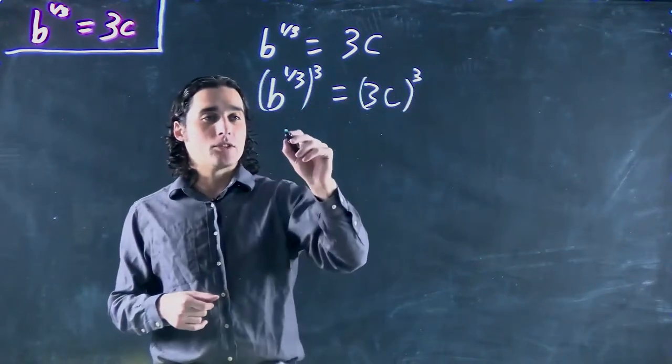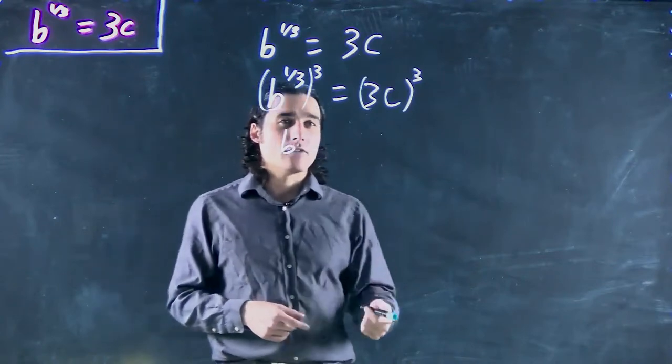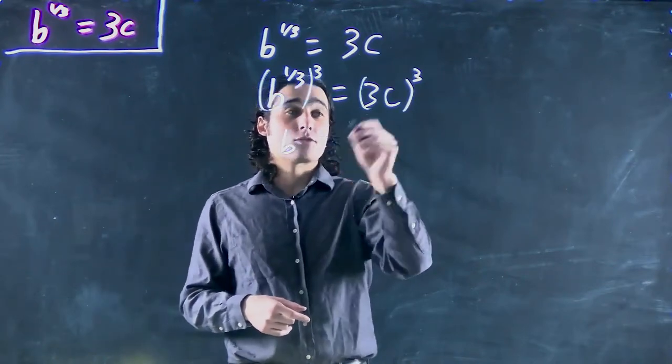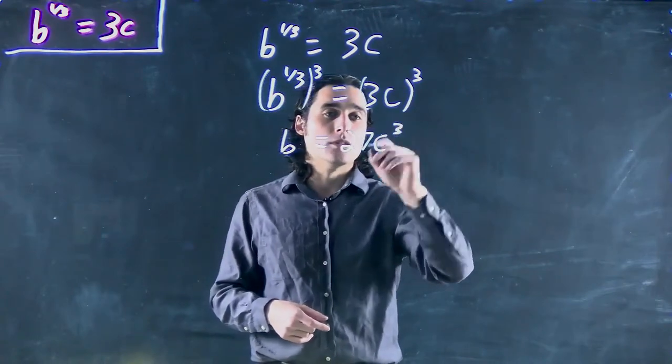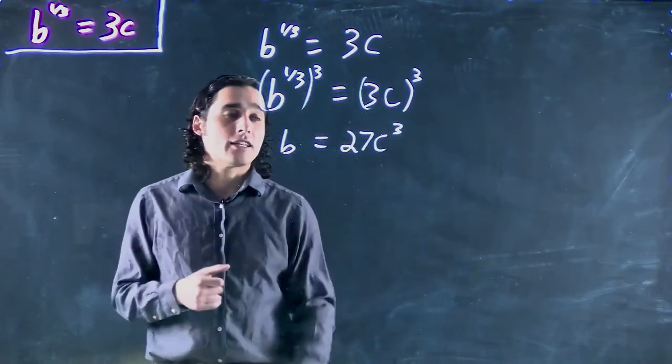Well, that becomes just b. And if we remember from the intro video, this can become 3 cubed or 27 and c cubed. And actually, that's our answer right there. So we're done.